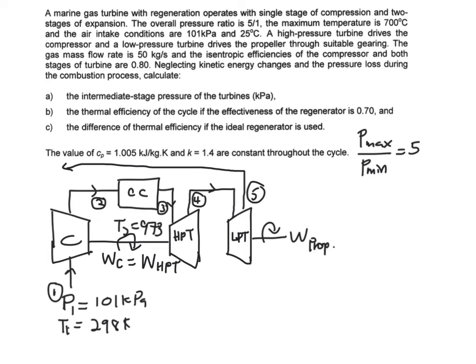And it says that the gas mass flow rate is 50 kg per second. So you have your m dot is equal to 50 kg per second.